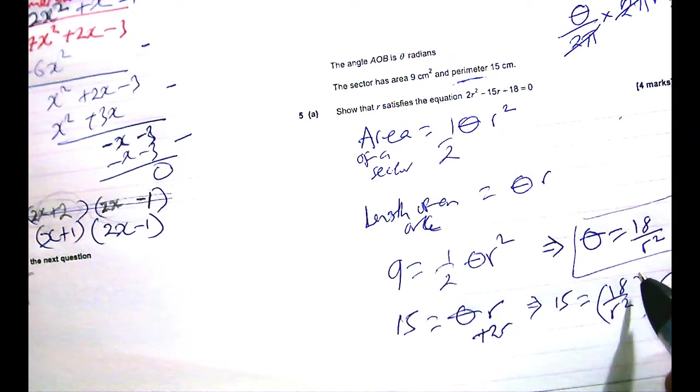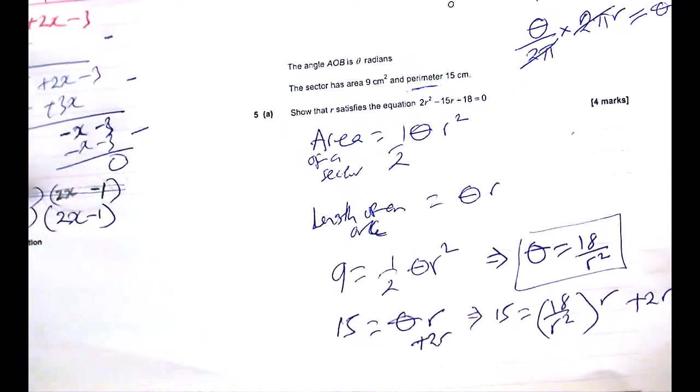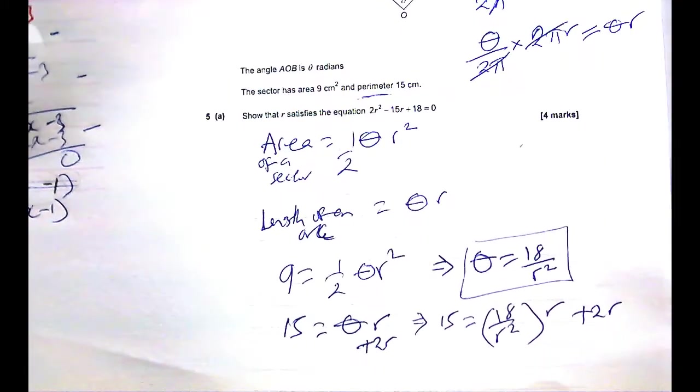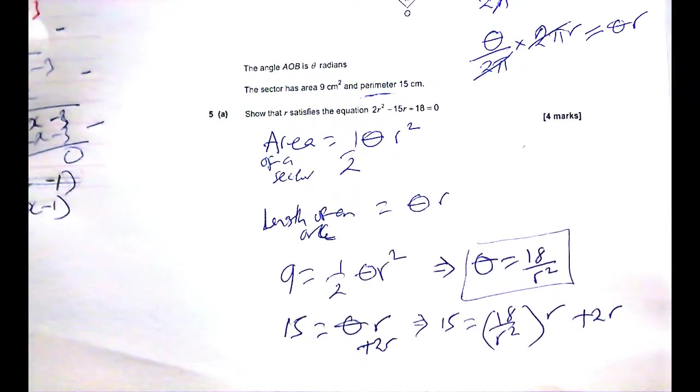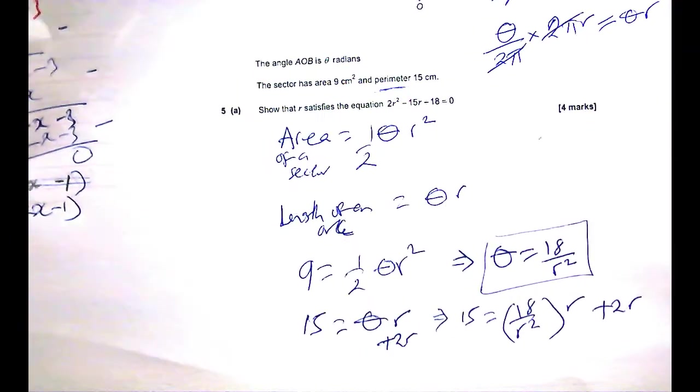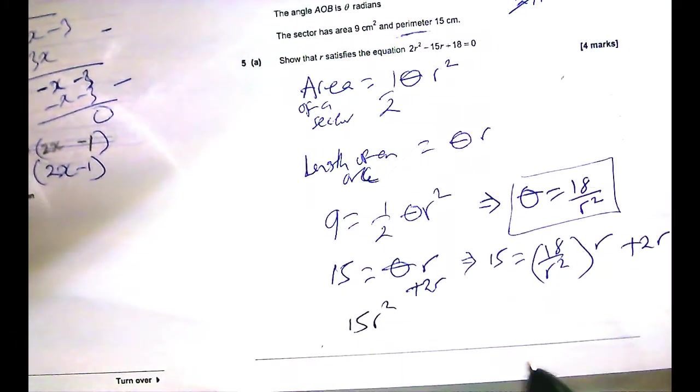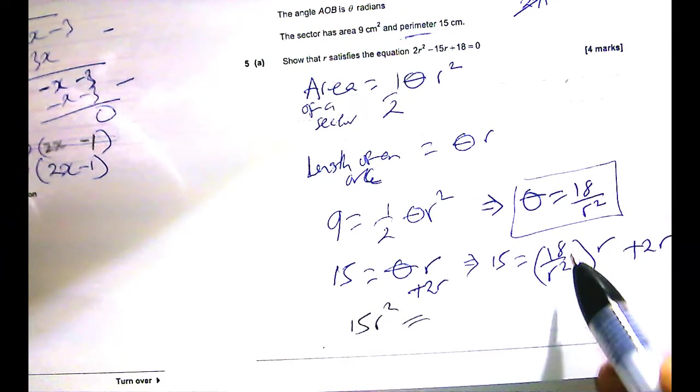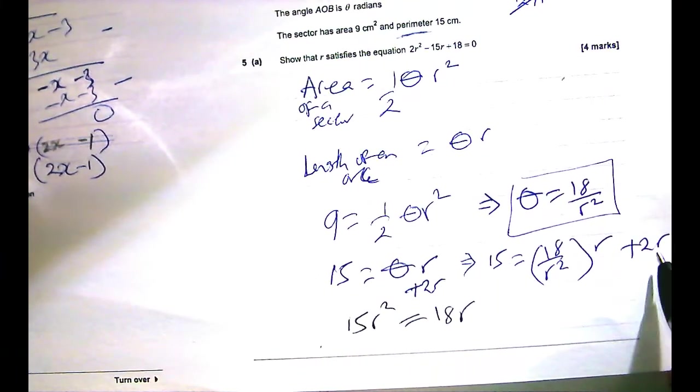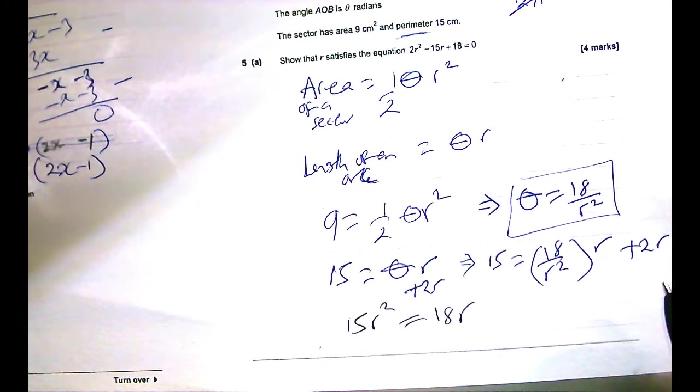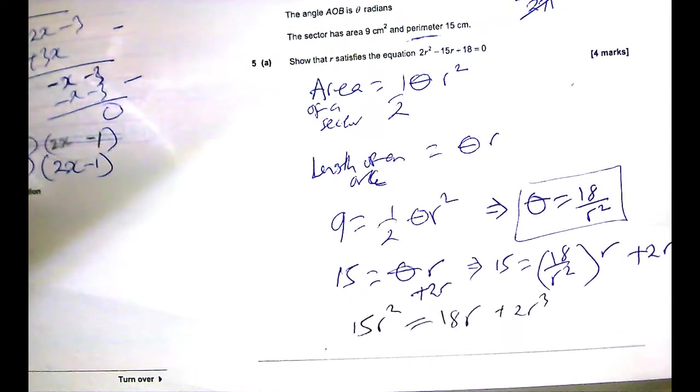Okay? So 15 is all that plus 2R. So I was going to make a mistake, but it's good that I found out because I know what I'm trying to achieve anyway. So we can multiply both sides by R². And when we do that, it becomes 15R² on this side. When you multiply this by R², you are left with 18R. And when you multiply that by R², you are left with 2R³.